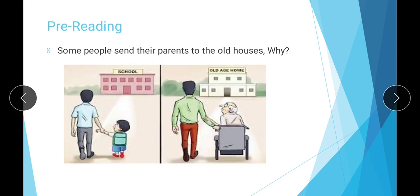Before starting the story, there is a pre-reading discussion: why do some people send their parents to the old house? There are many reasons. One apparent reason could be poverty — the children cannot manage to take care of their parents, so they send them to an old people's home.